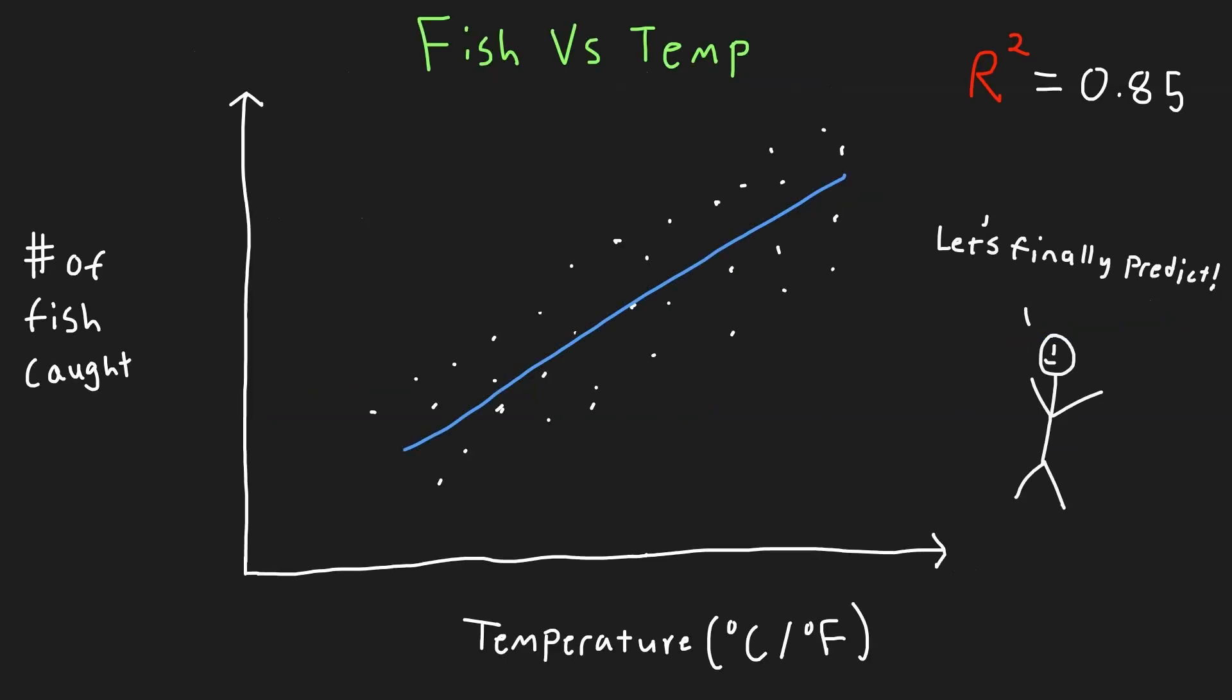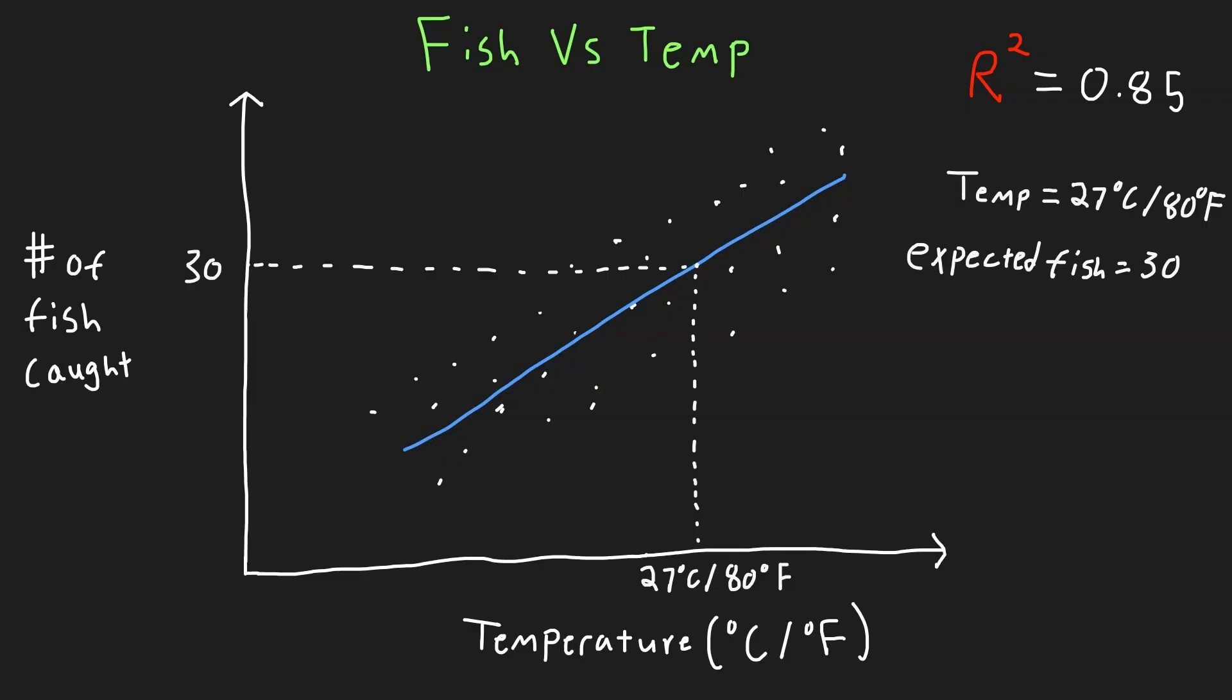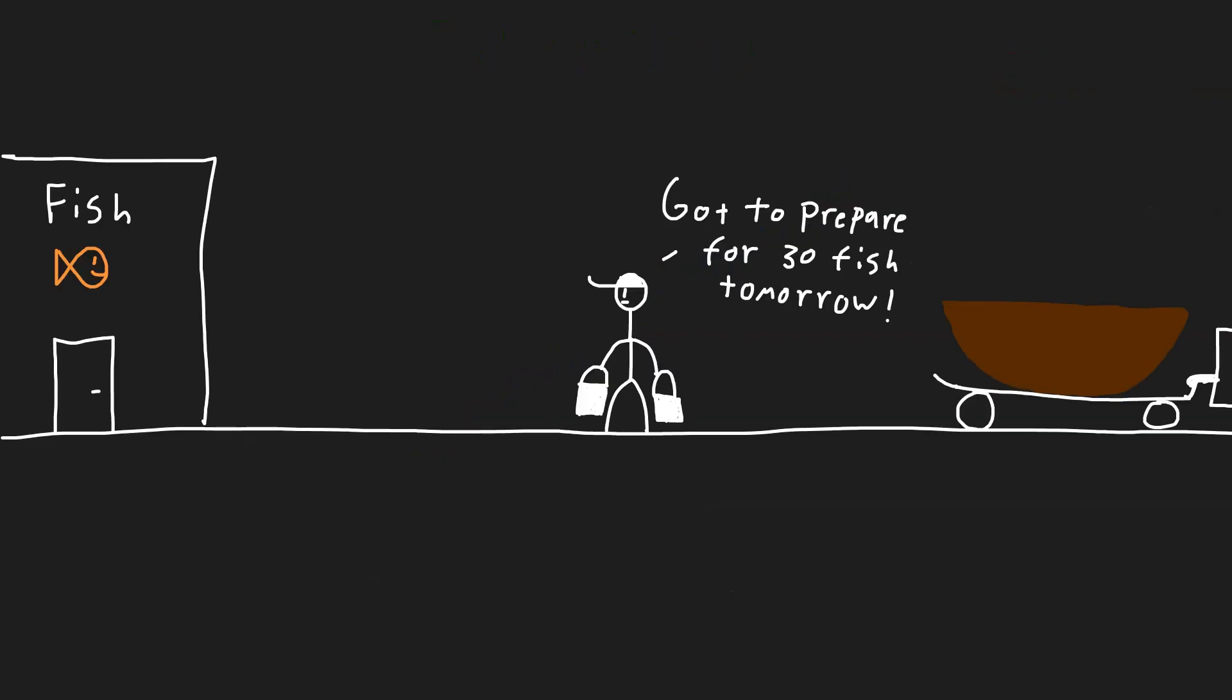So after building, testing, and verifying our model, let's finally make a prediction. The forecast says that tomorrow has an average temperature of 27 degrees celsius or about 80 degrees fahrenheit. From our graph, we can then find the y values associated with the temperature to be 30 fish, which is how much we can expect to find. You can relay this information back to Matthew, and now he knows before he even wakes up how many fish he can expect to catch tomorrow.